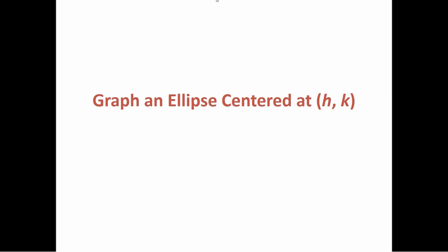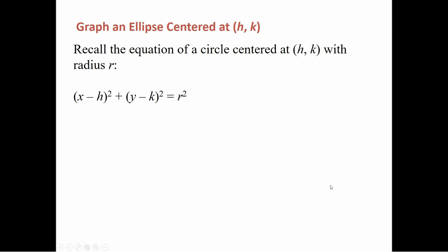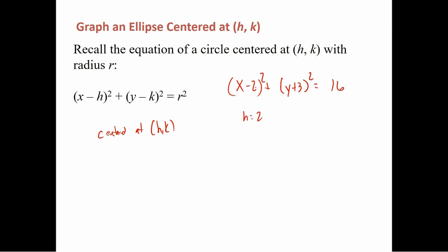In this video, we're looking at graphing an ellipse centered at (h,k), so anywhere other than the origin. Recall that the equation of a circle centered at (h,k) with radius r was (x−h)² + (y−k)² = r². So whatever h and k were became the center. For example, if we had (x−2)² + (y+3)² = 16, then h was positive 2 and k was negative 3, because the minus sign is part of the formula so we take the opposite. We're going to do the same type of deal with an ellipse centered at some other point.